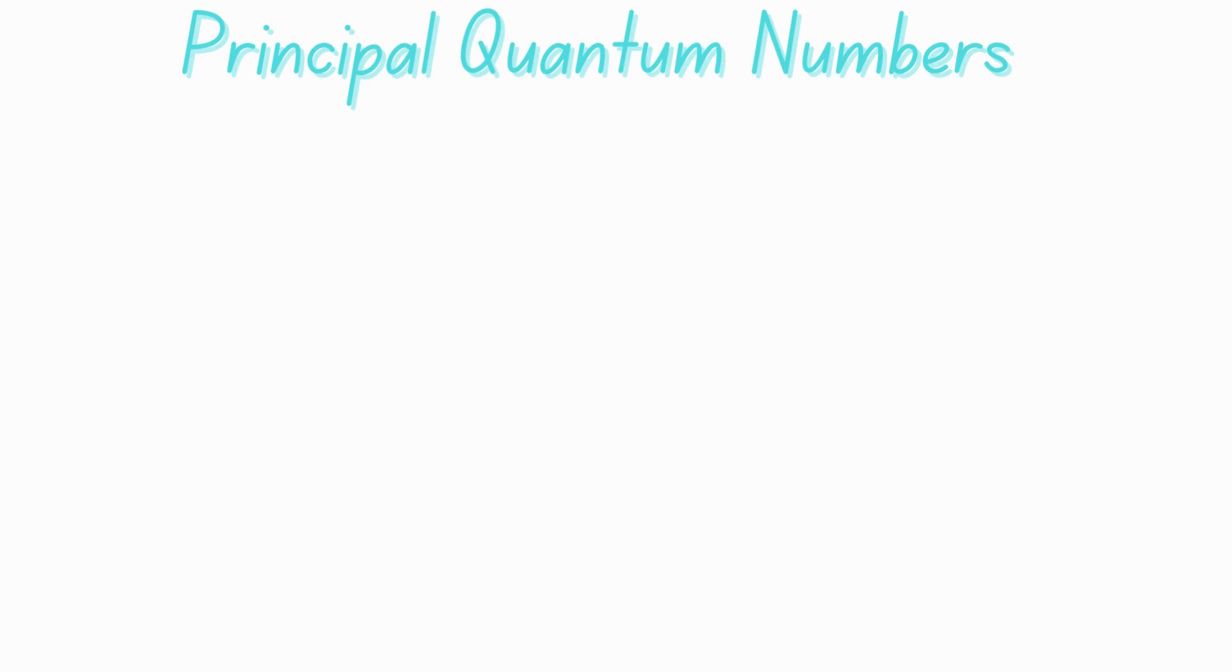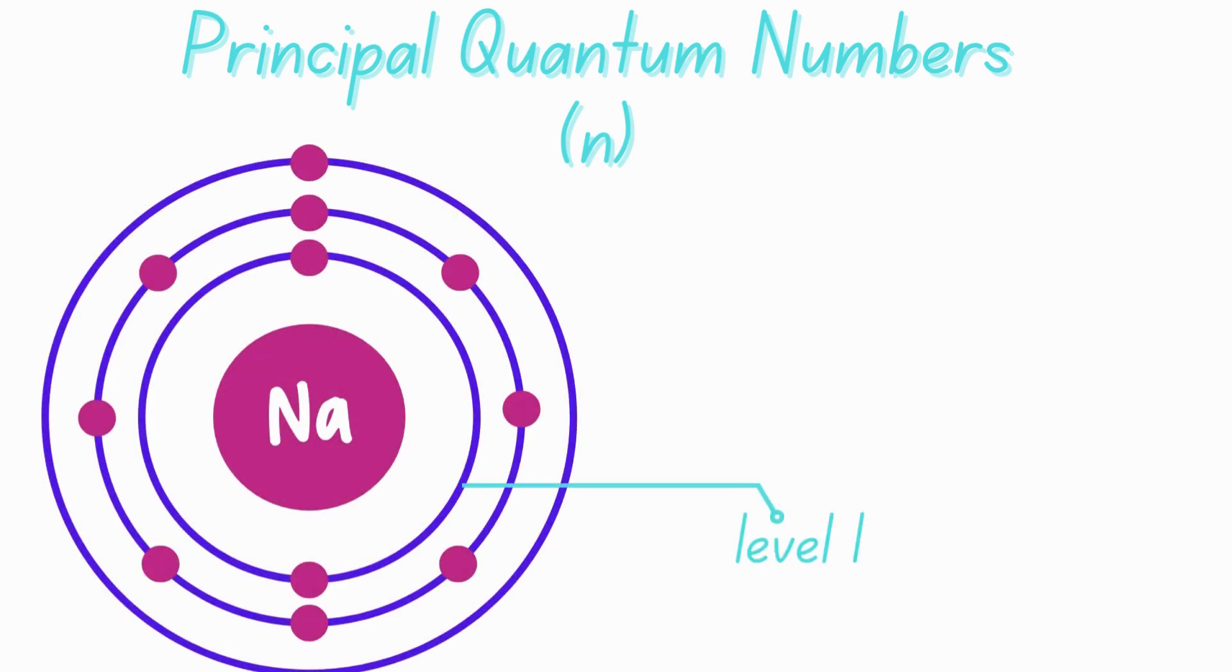The principal quantum number, also called n. The principal quantum number is the first of the four quantum numbers, and it describes the energy level or shell of an electron in an atom. It determines the electron's average distance from the nucleus and the overall size of the orbital.